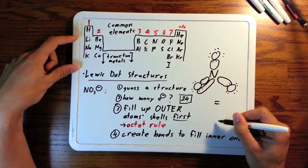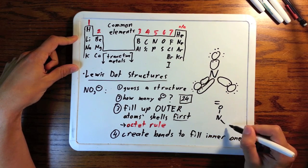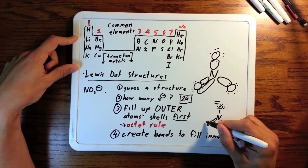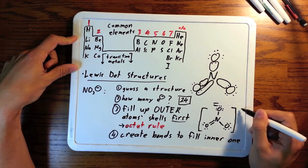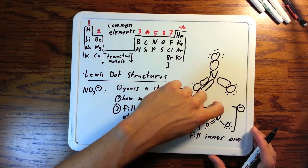Now, this is not a proper Lewis structure. It's a representation that helps us figure out the Lewis structure. Now, we draw it. Turn those bonds into sticks, put the lone pairs on, include the charge. That's the Lewis structure for nitrate.